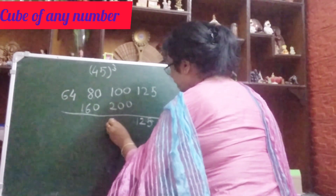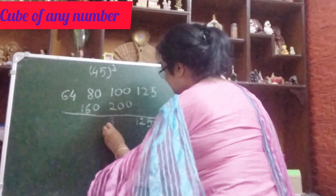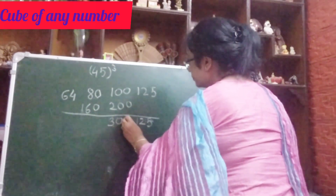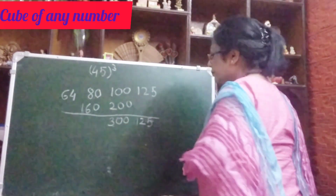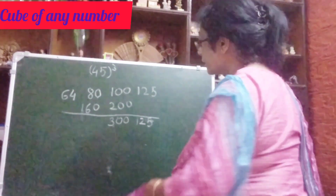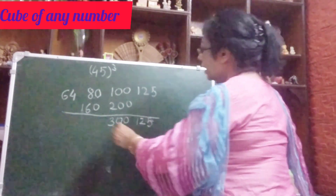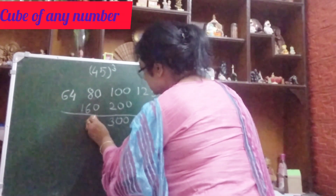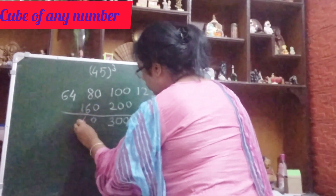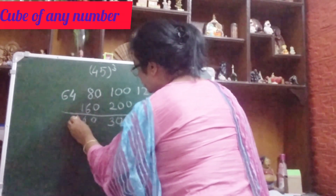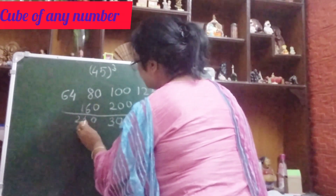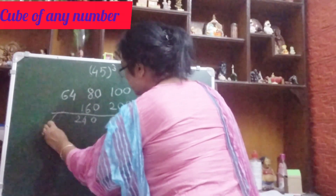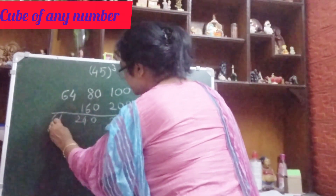Now 100 plus 200 is 300. Then it is 0, 4, 2 — that is 240. And 64 is here.